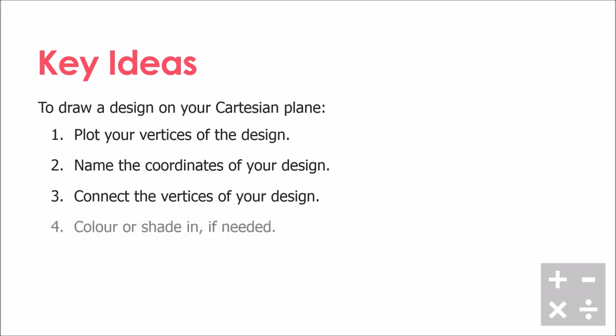Now the key ideas for our whole section are as follows. To draw a design on a Cartesian plane: first, plot your vertices of your design. Then, name the coordinates of your design - I actually didn't do that in my last example and I recommend you going back and adding some labels to those points, like A, B, C, whatever variables you want to use. Then connect the vertices of your design so it makes your design the way you want it. You can color or shade it in if you need to.